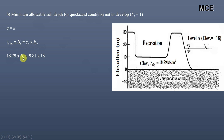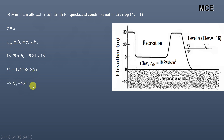We need to find the depth of clay hc. Unit weight of water is 9.81 kN/m³, and the head of water is given at level A as 18 meters. Solving for hc: it equals 176.58 divided by 18.79, which equals 9.4 meters. So when the depth of clay on the left-hand side equals 9.4 meters, we get a factor of safety equal to 1 against the quicksand condition.